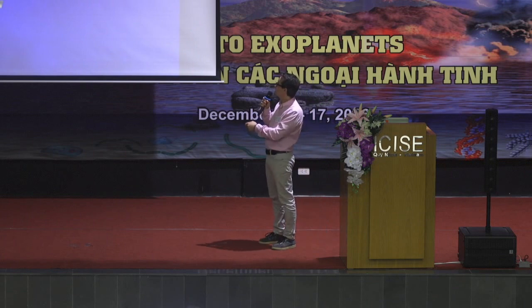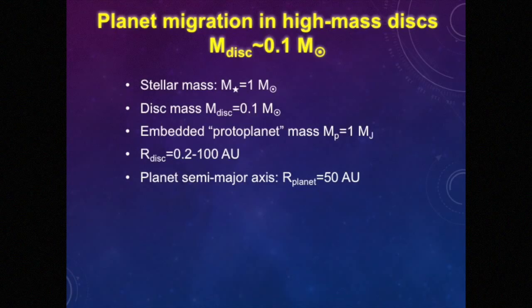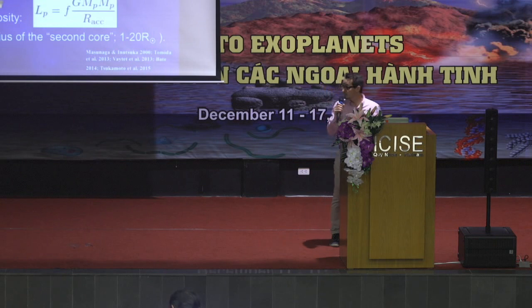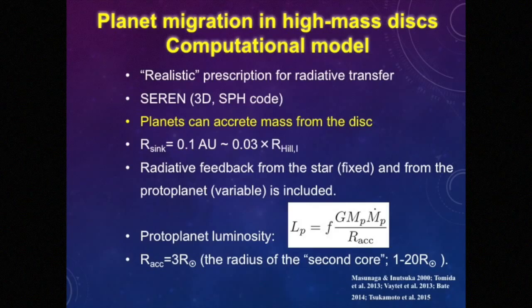I tried to study a similar system. I have a stellar mass of one solar mass and a disk of 0.1 solar masses, and I embed a protoplanet of one Jupiter mass at a distance of 50 AU. In my models, I include the mass increase of the planet due to accretion of material from the disk. And also, in one of the models, I include radiative feedback from the planet to the disk, because as matter is accreted onto the planet, gravitational energy is transformed into thermal energy at the accretion shock around the protoplanet, and this energy is radiated back into the disk.